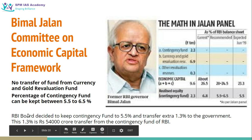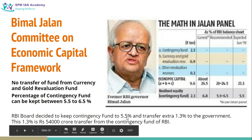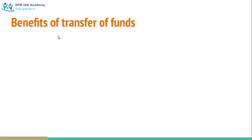On this committee's recommendation, the RBI board decided to keep the contingency fund at 5.5 percent. The current contingency fund is 6.8% of total RBI assets. It was decided to reduce it to 5.5% as per the Bimal Jalan Committee recommendation. The extra 1.3 percent from the contingency account was decided to be transferred to the government. This 1.3 percent comes to about 54,000 crore, and this will be transferred from the contingency fund of RBI to the government.